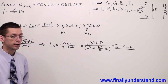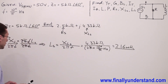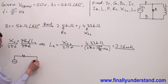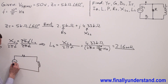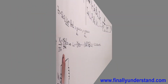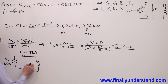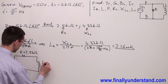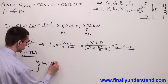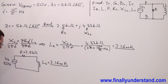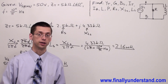Next, we can redraw the circuit simply by drawing the series equivalent one. I have a voltage source, a resistor, and an inductor. The voltage source has a value of 50 volts, R equals 2.5 kΩ, and the inductance Ls equals 2.16 mH. Now the problem is solved.